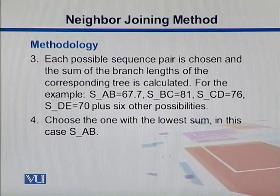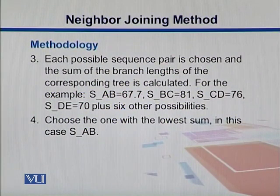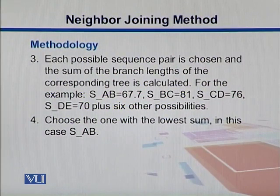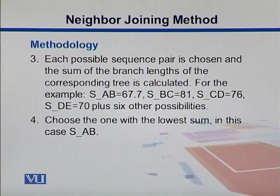We can calculate the possible sequence pairs and the sum of the branch lengths for corresponding trees. For example, the score between A and B can be calculated as 67.7. Same way, we can come up with B and C, C and D, D and E, and other possibilities. Then we choose the one with the lowest sum. In this case, we have S(A,B) which is the lowest, and we can use this to start with the first pair of neighbors.